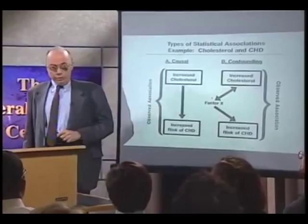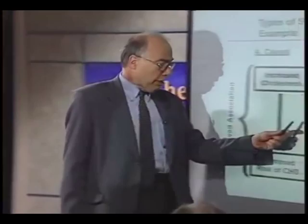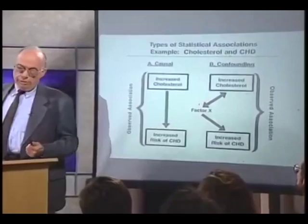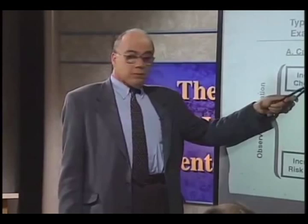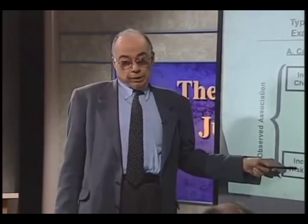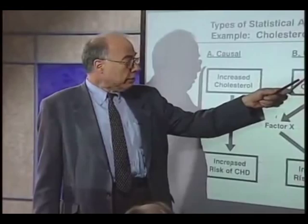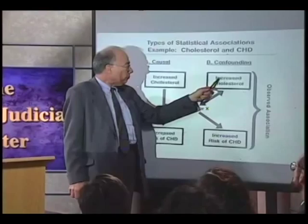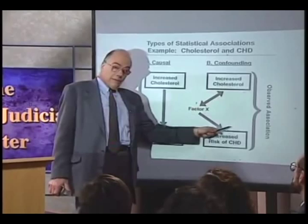What could that be? It could, for example, be the genetic profile of the individual. There could be a group of individuals whose genetic profile puts them at increased risk of coronary heart disease, and that same genetic profile is associated with increased cholesterol. Why does this matter? If the true model is the causal one on the left, then intervening to lower cholesterol should lower the risk of coronary heart disease. But if the model is confounded, no matter what we do to reduce cholesterol, we are unlikely to have any impact on coronary heart disease risk, which is being caused by the genetic profile. So understanding whether a relationship is causal or confounded is extremely important.